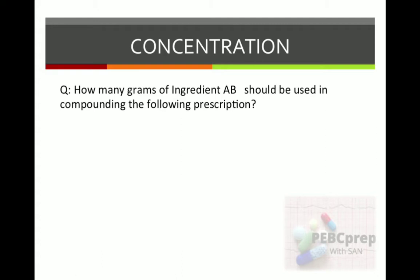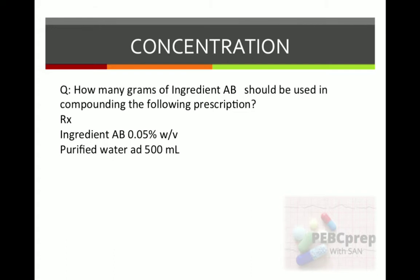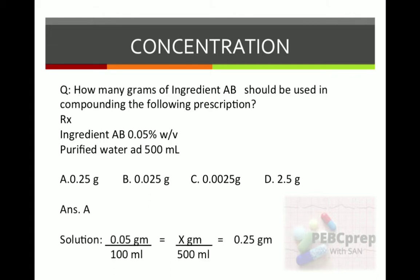Next example: how many grams of ingredient AB should be used in compounding the following prescription? Ingredient AB: 0.05% weight by volume, purified water to 500 ml. Options: A) 0.25, B) 0.025, C) 0.0025, D) 2.5 grams. The answer is A: 0.25 grams.